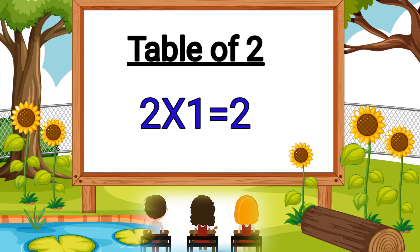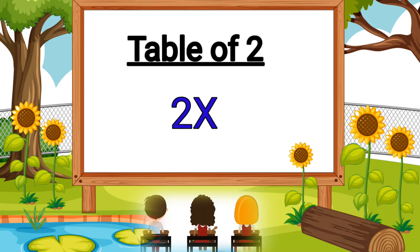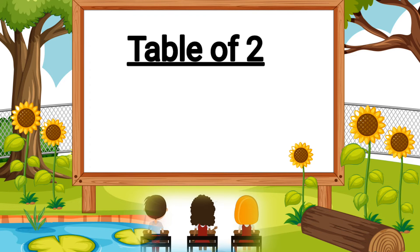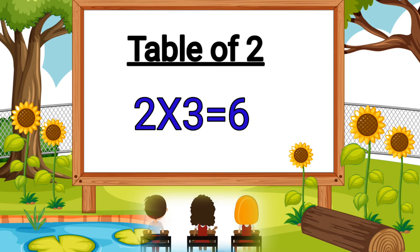Two ones are two. Two twos are four. Two threes are six.